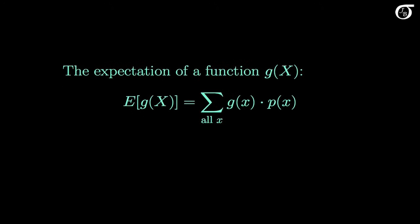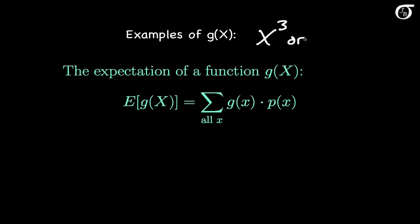We can also calculate the expectation of a function of x using a similar approach. Here g represents a function of x — for example, g(x) might be x cubed or the square root of x. To calculate the expectation of a function g(x), we multiply the value of that function by the probability that value occurs and add that up over all possible values of x. That's again a weighted average of the values of the function, weighted by their probability of occurring.